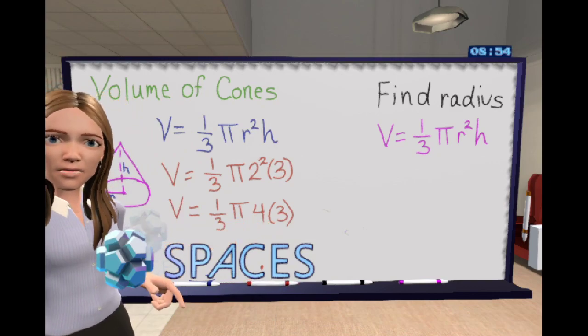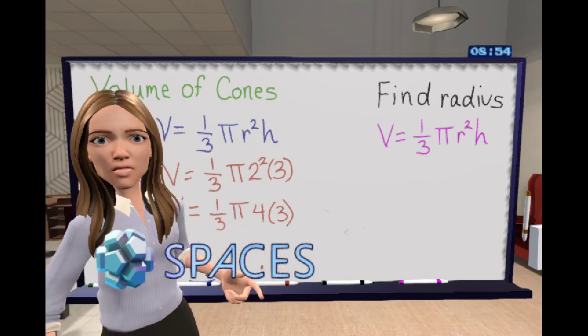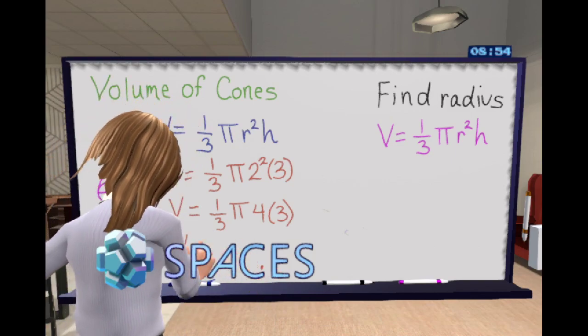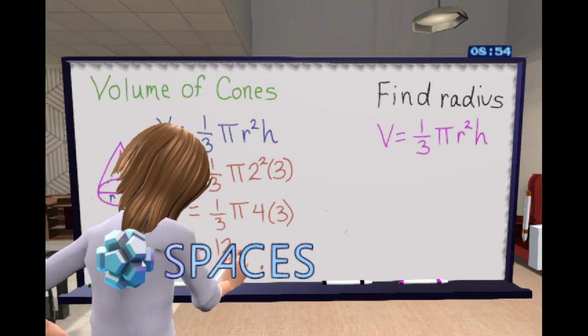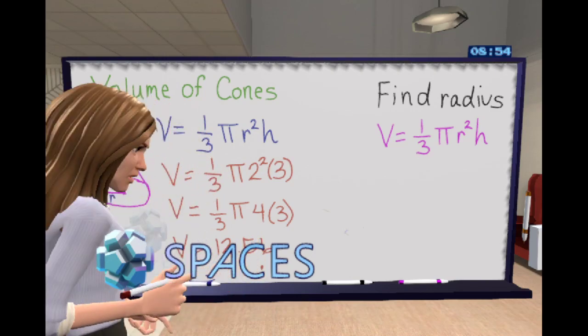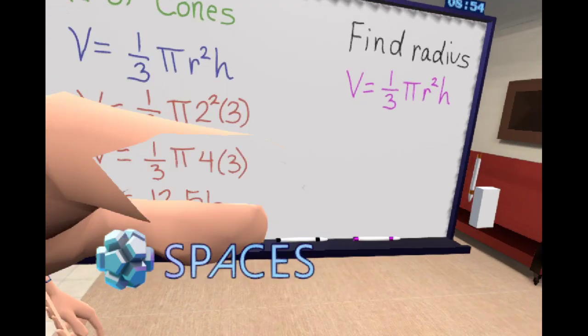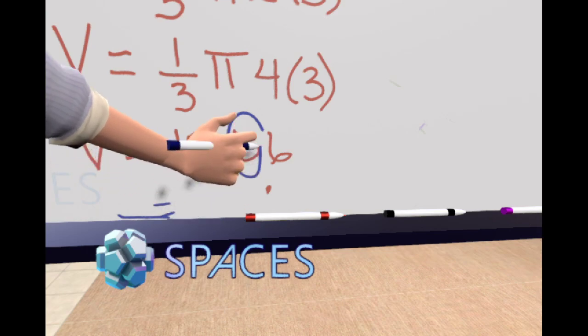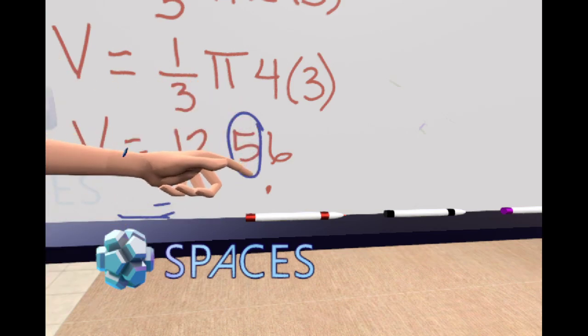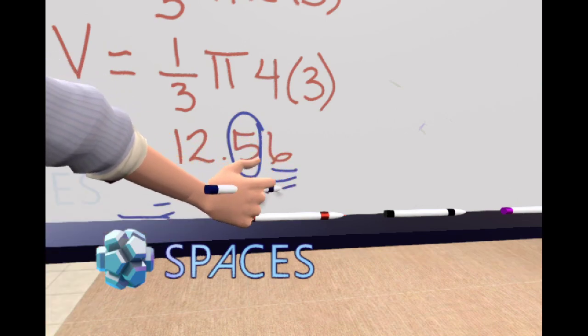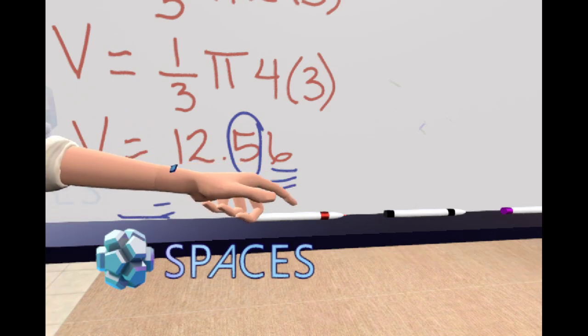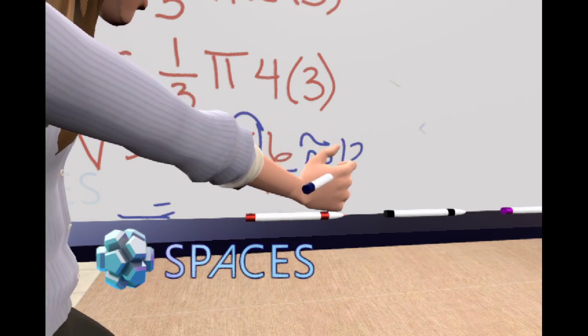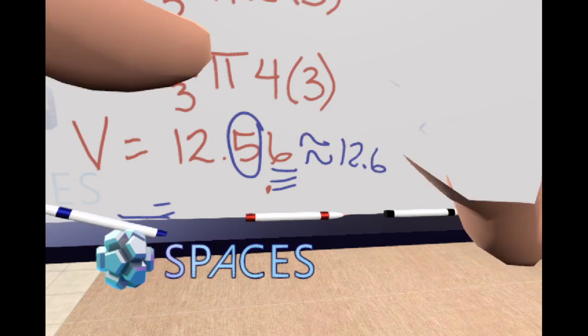Now let's continue. Twelve times 3.14. Plug it in. And now divide that answer by three, and tell me what you get. So our volume should equal 12.56. I'll zoom you in here so that we can talk about rounding. When we are rounding to the nearest tenth, that is one digit past that decimal. So if I asked you to round this to the nearest tenth, what would you get? Our approximately sign? Absolutely, 12.6.